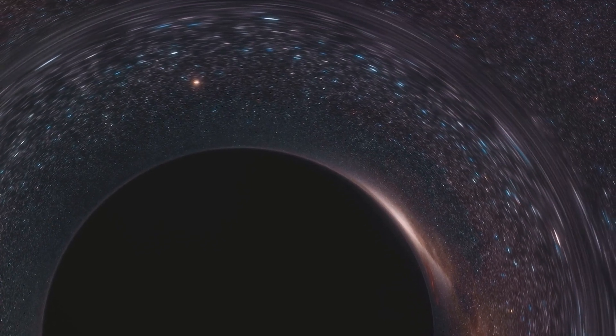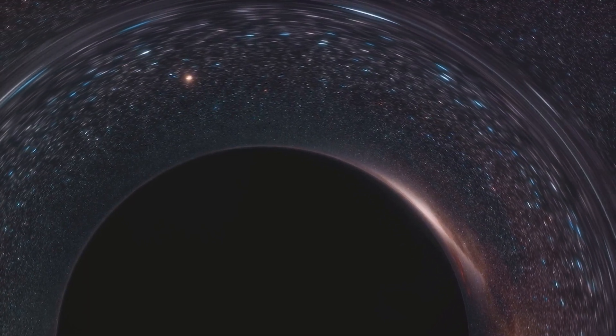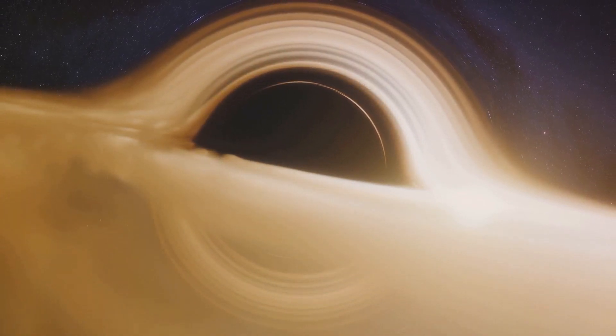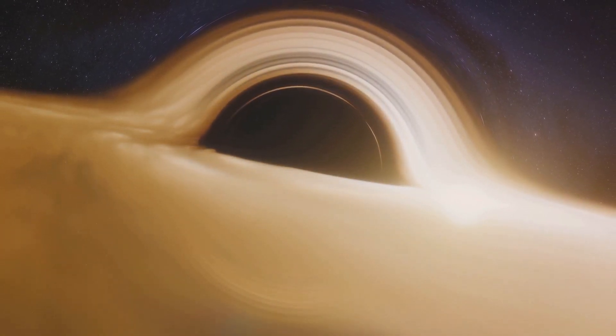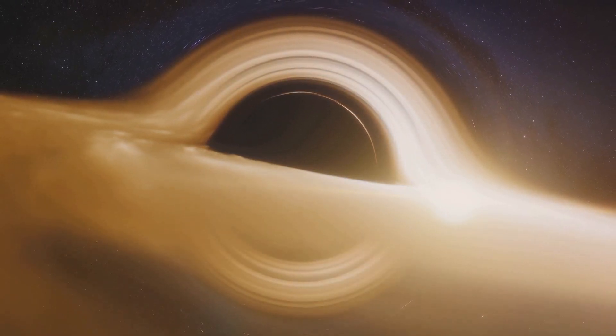In 2019, the EHT provided us with the first-ever image of a black hole located in the galaxy M87. But that's not all. The EHT is also focused on another tantalizing target, Sagittarius A asterisk, our very own supermassive black hole at the heart of the Milky Way.